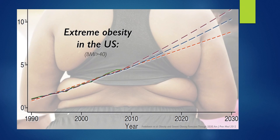Even the pediatric population is now affected. In fact, we are now defending against a high weight set point compared to that in the 50s and 60s. Gene mutation happens over millions of years — it doesn't happen in 50 years. So what's going on? This will be explored in this talk.